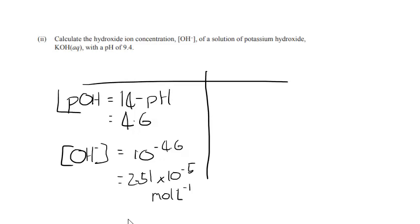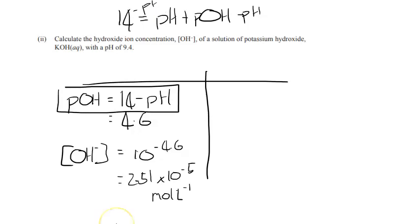So the way that I got this pOH equals 14 minus pH is just using the formula 14 equals pH plus pOH. So we just rearrange it, we minus pH from both sides, and then we end up with pOH equals 14 minus pH. So that's one way to work it out.